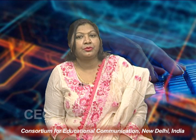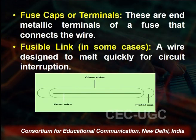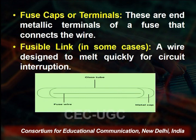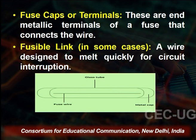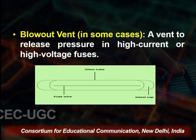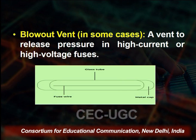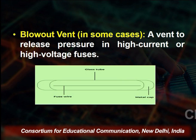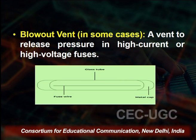This diagram represents how the fuse is constructed. The fused element sits in the middle, encapsulated in the fused body, with metallic cap terminals on both sides that connect to the wire. In some cases, a fusible link — a wire designed to melt quickly for circuit interruption — is used. Some fuses also have a blow vent to release pressure in high current or high voltage situations.